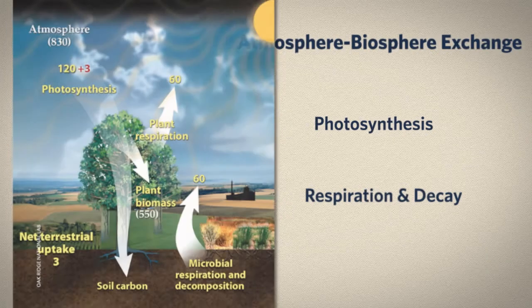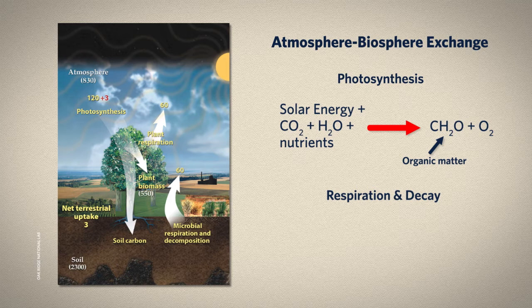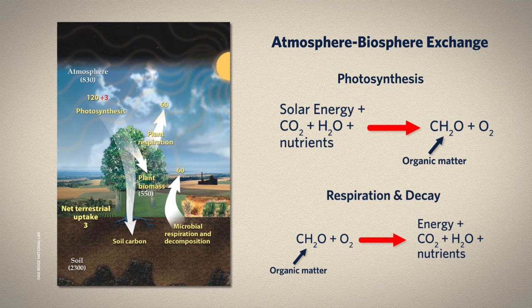We'll take a look at the most important processes by which the atmosphere exchanges carbon with biology on land. During photosynthesis, plants use energy from the sun to combine carbon dioxide, water, and nutrients — things like nitrogen and phosphorus — and in the process they produce organic matter and release oxygen to the atmosphere. The source of CO2 for photosynthesis is the atmosphere; that's where the plants are getting their carbon. When the plants respire or decay, or animals respire or decay, the organic matter recombines with oxygen and the CO2, water, and nutrients are released along with some energy. Most of the carbon drawn out of the atmosphere by plants each year goes back into the atmosphere fairly quickly. Just a tiny amount of organic matter gets buried every year and sent into long-term storage in rocks.